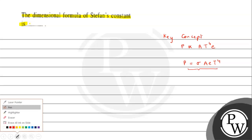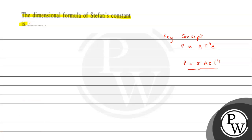To find the dimension of Sigma, we rearrange: Sigma can be written as P divided by e·A·T⁴. Here P means power.